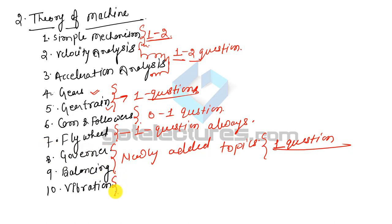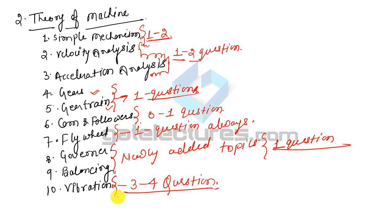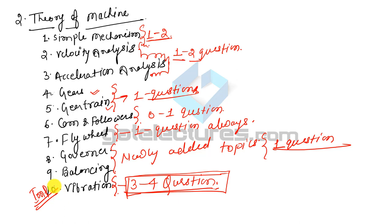Vibration is a very, very important topic. It contributes 3 to 4 questions. The three types of vibration — natural vibration, damped vibration, and forced vibration — plus vibration isolation and whirling of shaft together contribute 3 to 4 questions. This topic cannot be skipped for GATE.